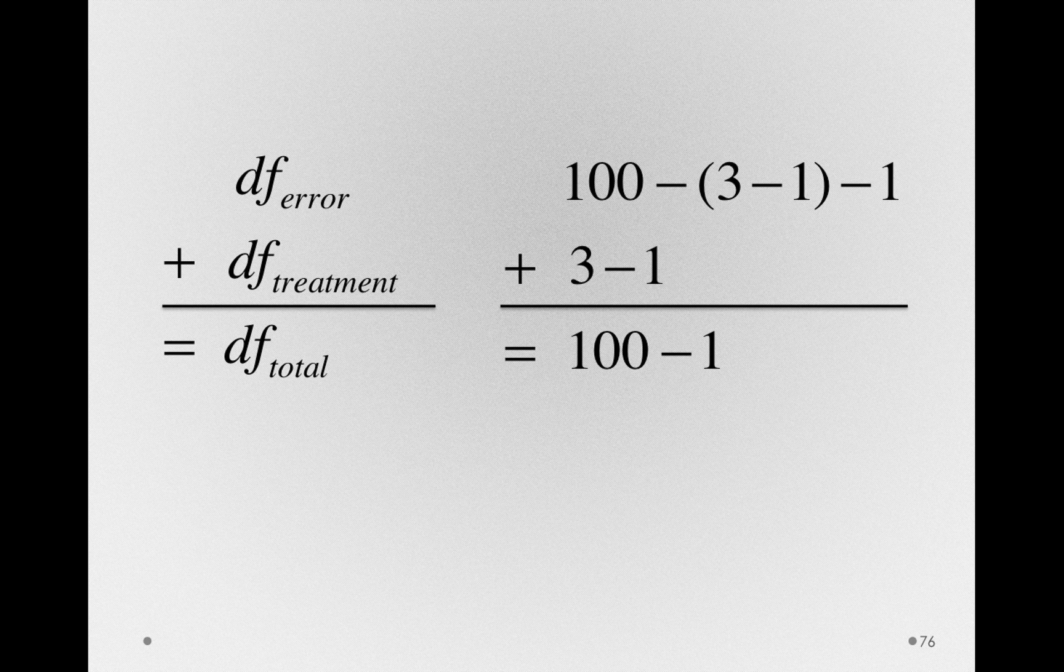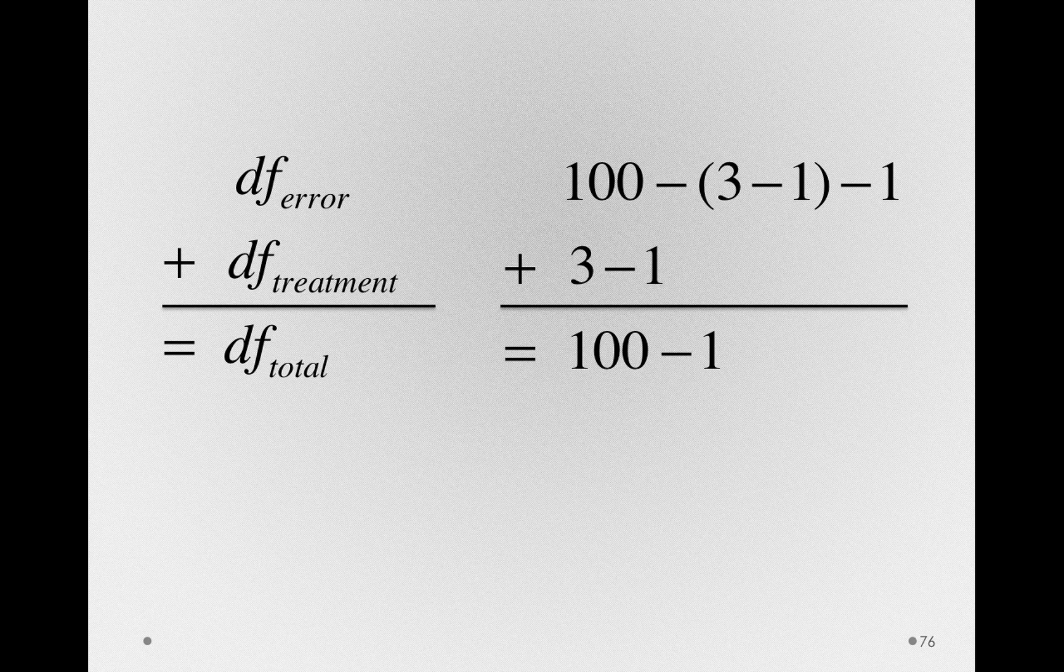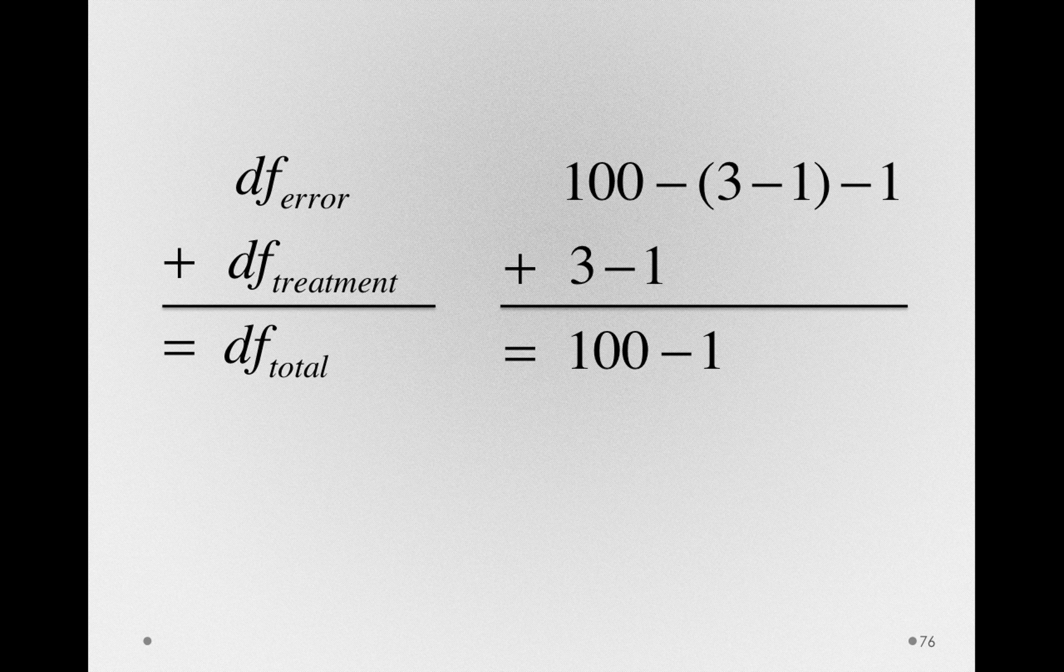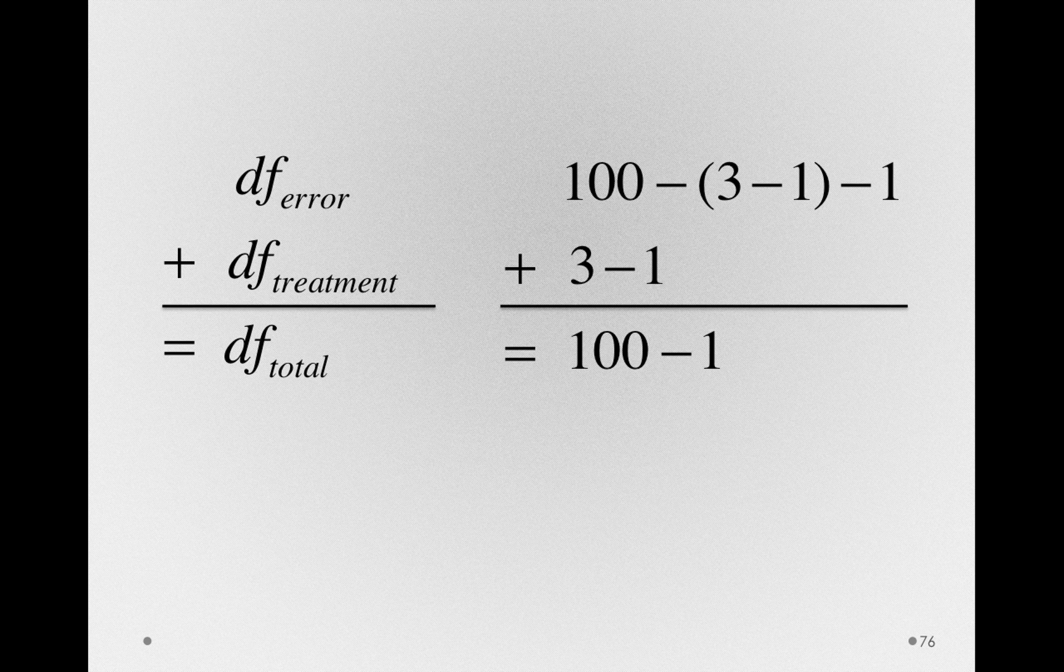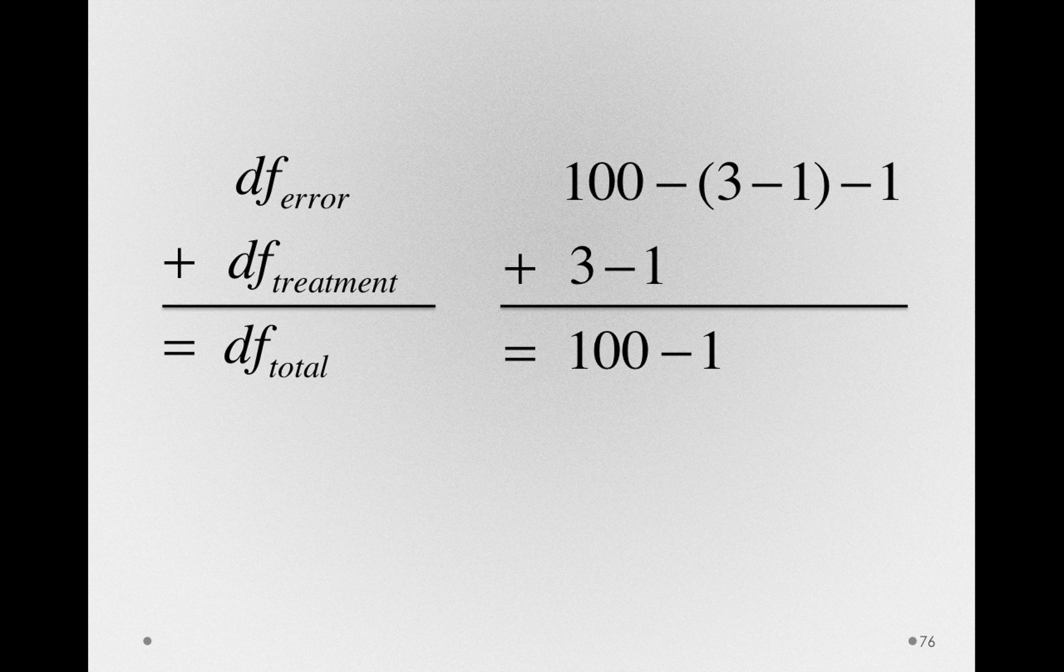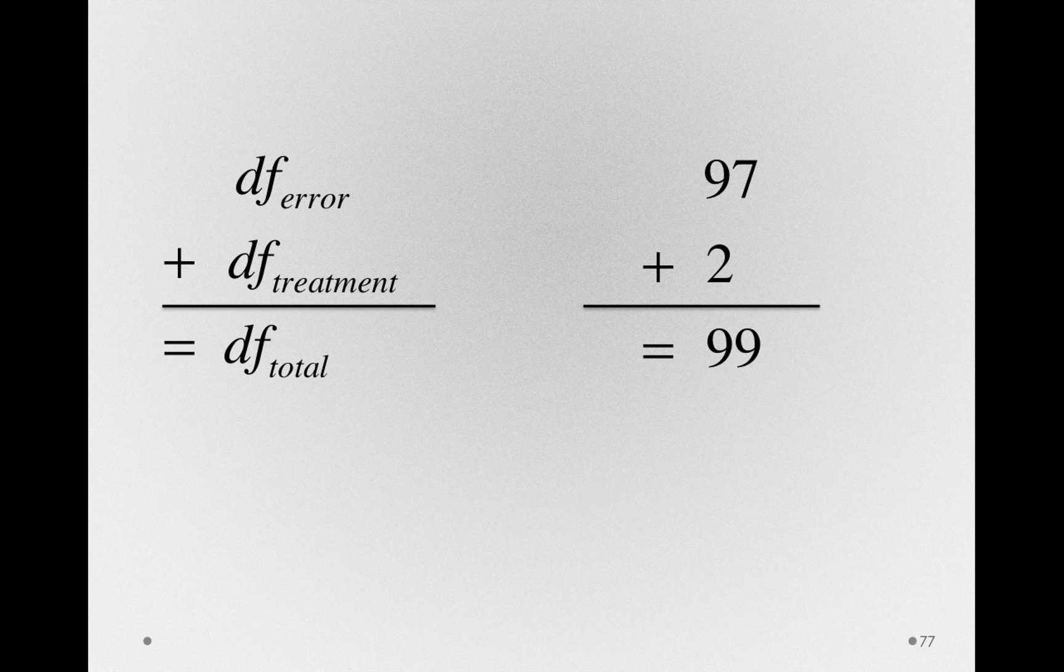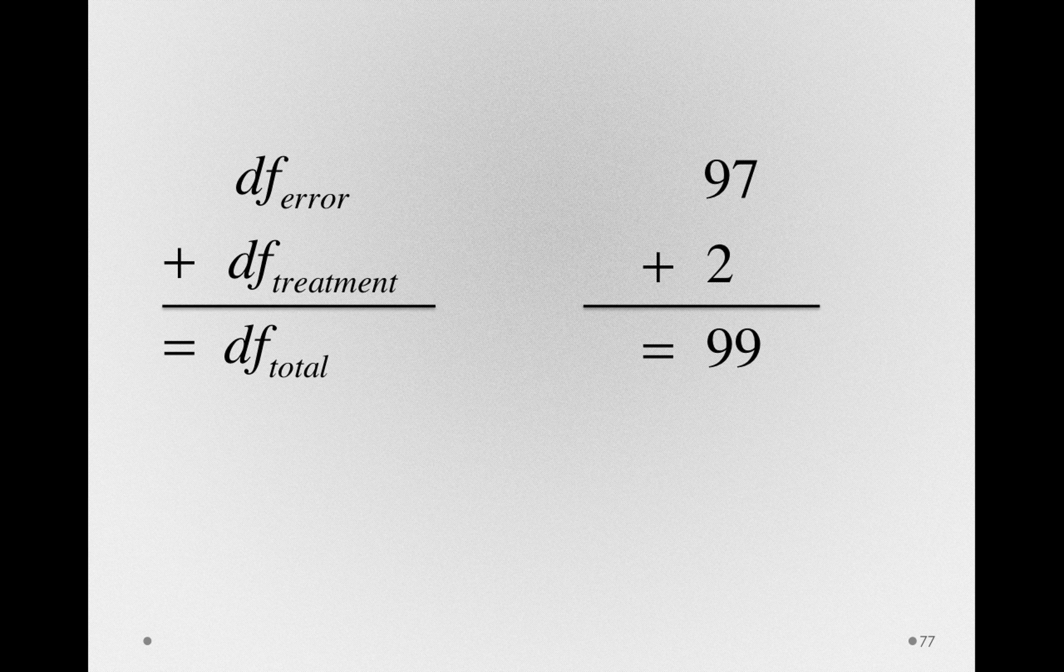For our particular dataset, we can see it this way. The degrees of freedom for error is 100 minus 3 minus 1, the 2 degrees of freedom for our treatment minus 1, plus the degrees of freedom for treatment, 3 minus 1, which equals the total degrees of freedom, the number of observations we had simply minus 1. So 97 plus 2 really does equal 99.